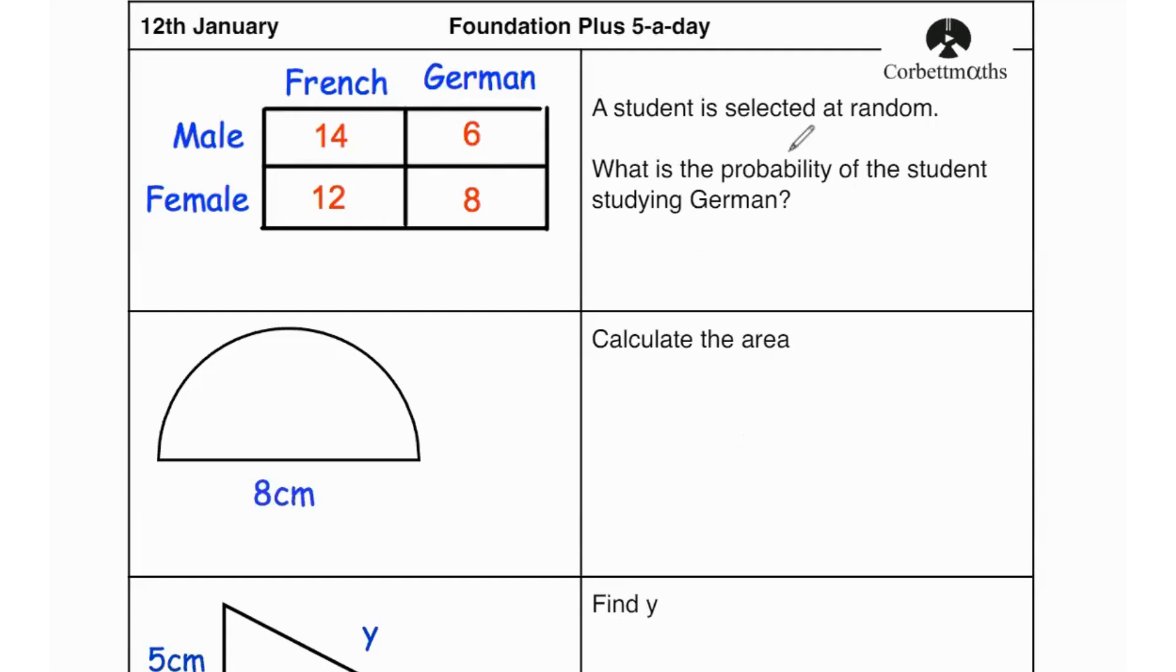First question says a student is selected at random from this table. What is the probability of the student studying German? So if we look over here, these are the students that study German. So that's going to be 6 plus 8 which is 14.